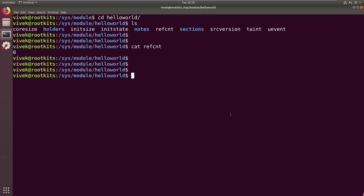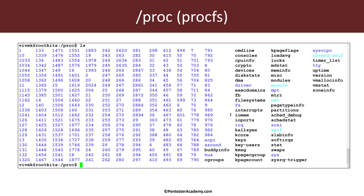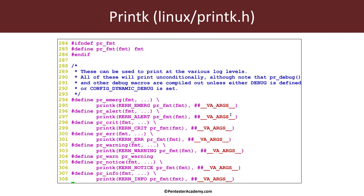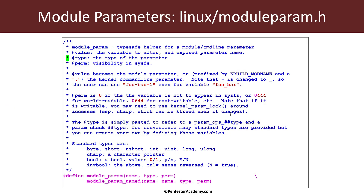In the last video we talked about module input parameters. The third option — perm — we had taken as zero. The help actually tells you: if perm is zero, the variable will not appear in sysfs, but if any other permission is granted, it will appear in sysfs with that permission set applied.